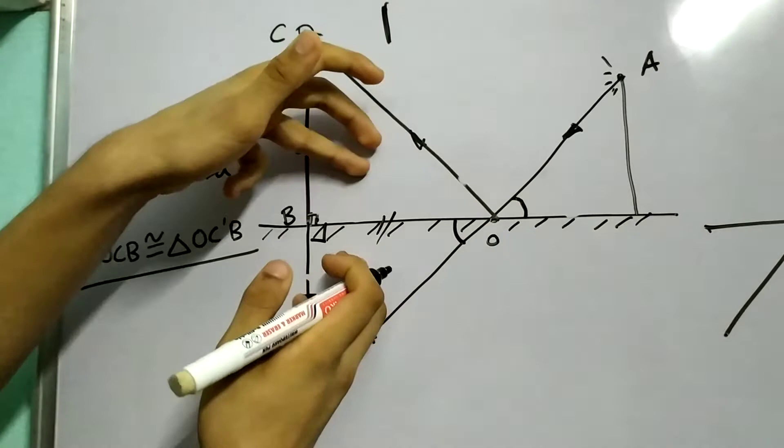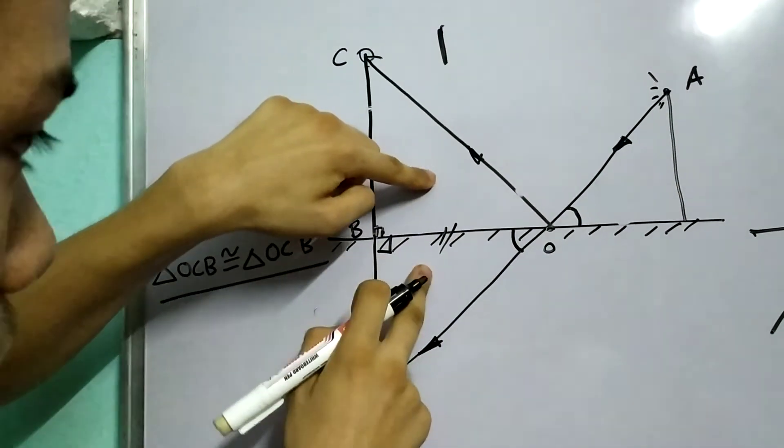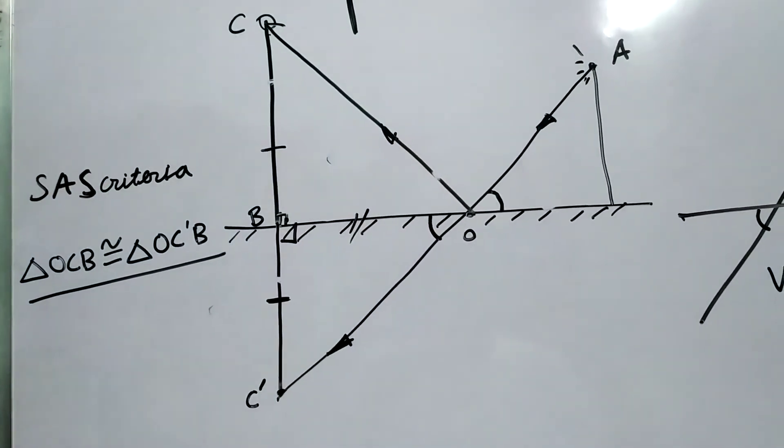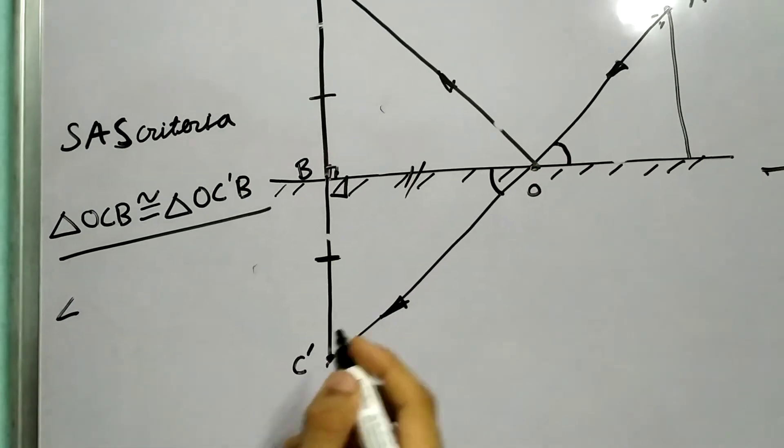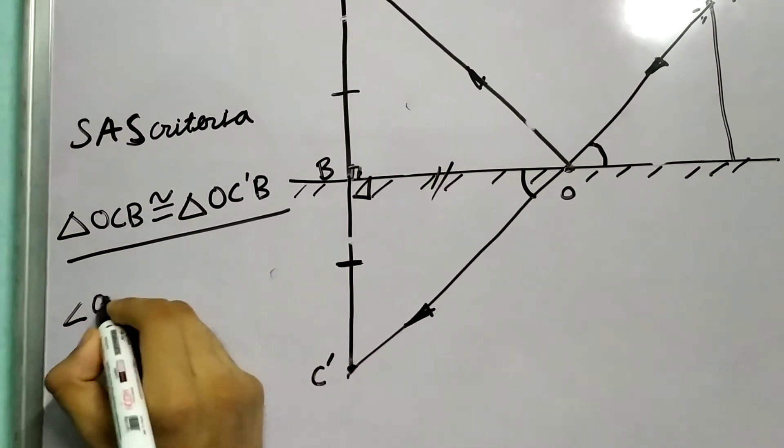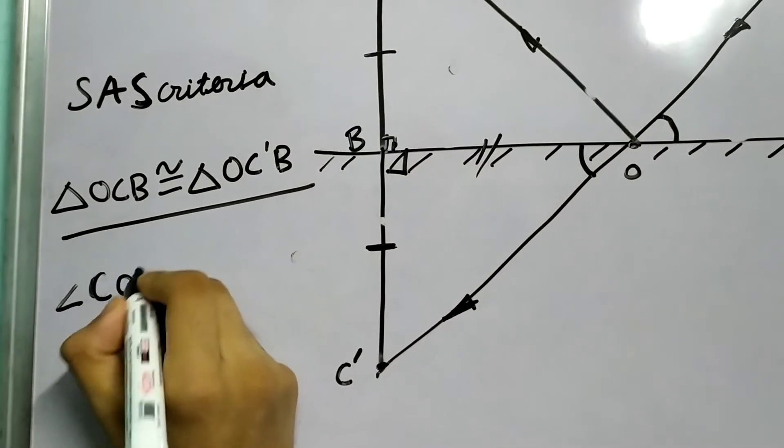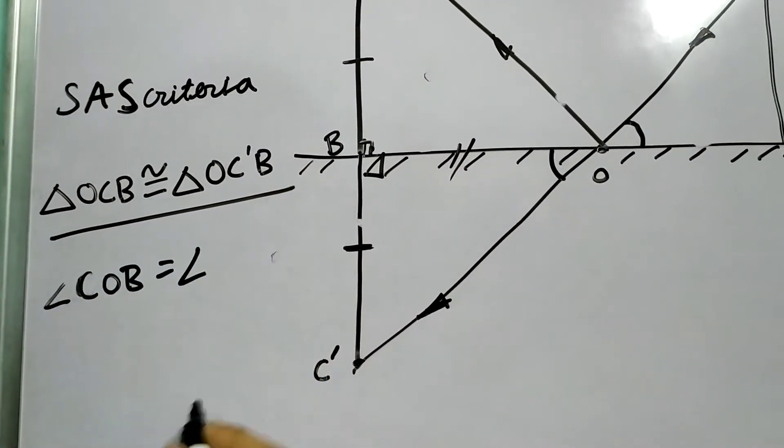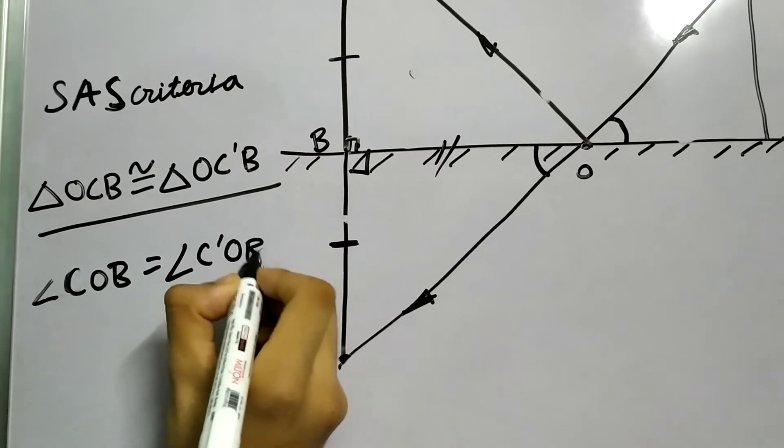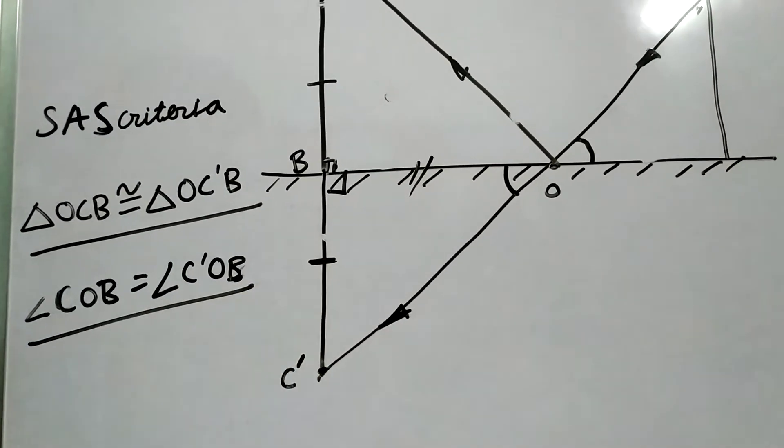Because we have these two triangles, these two triangles are congruent. Therefore, these two angles must be equal. If you want to write this, we can say that angle COB is equal to angle C'OB. Another important part.